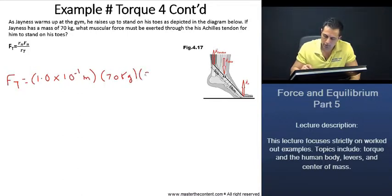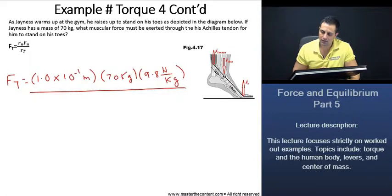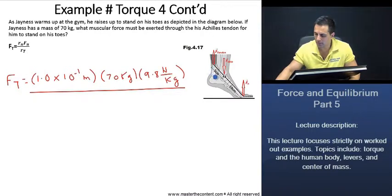You just take his mass times little g, and his mass is 70 kilograms. And little g, as we know, is just going to be 9.8 newton per kilogram for simplicity of our units. We take that over the distance of where that muscular force through the tendon is being exerted, and that is going to be 5 centimeters.